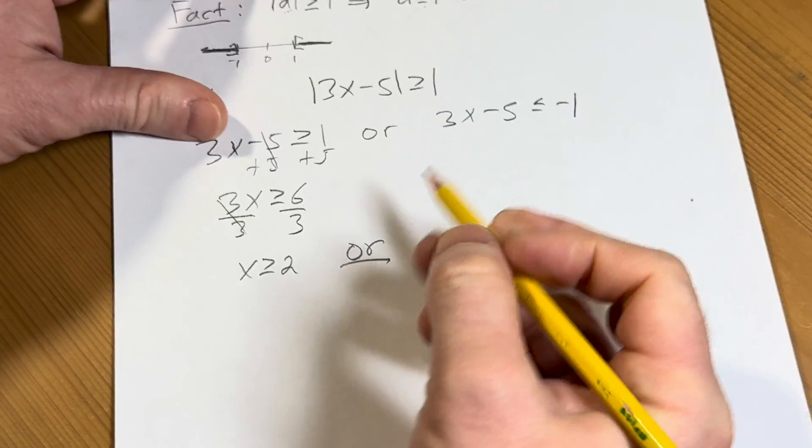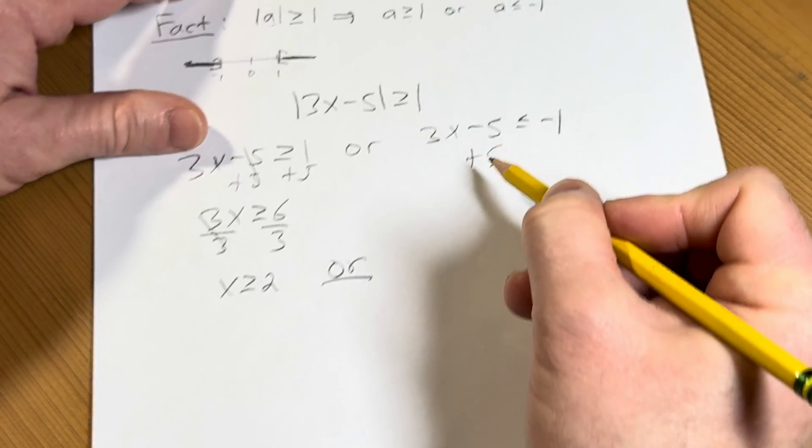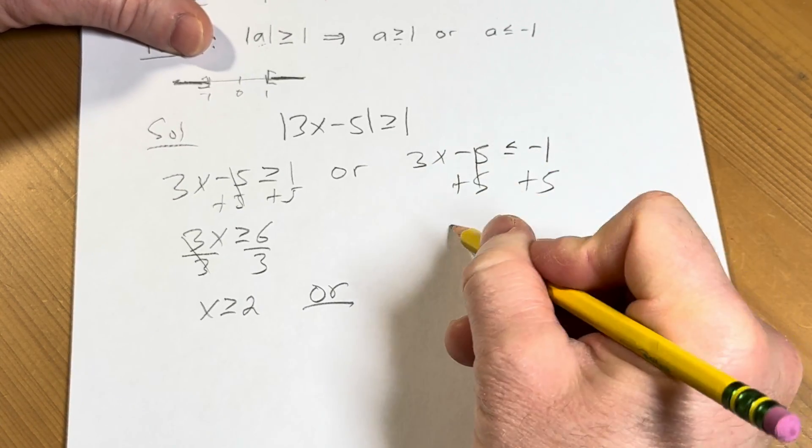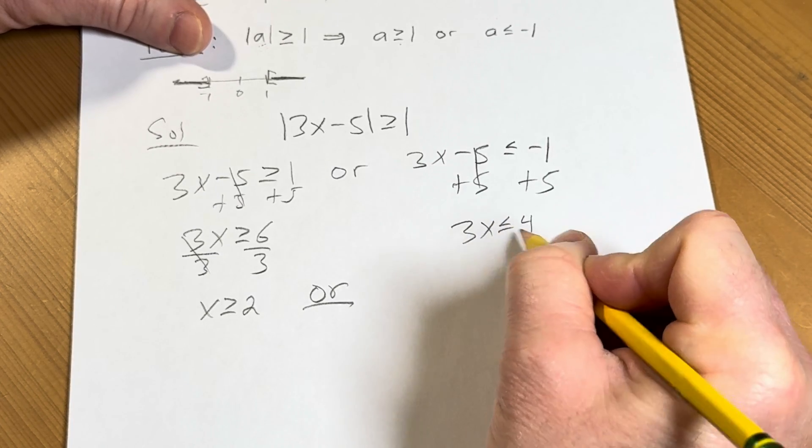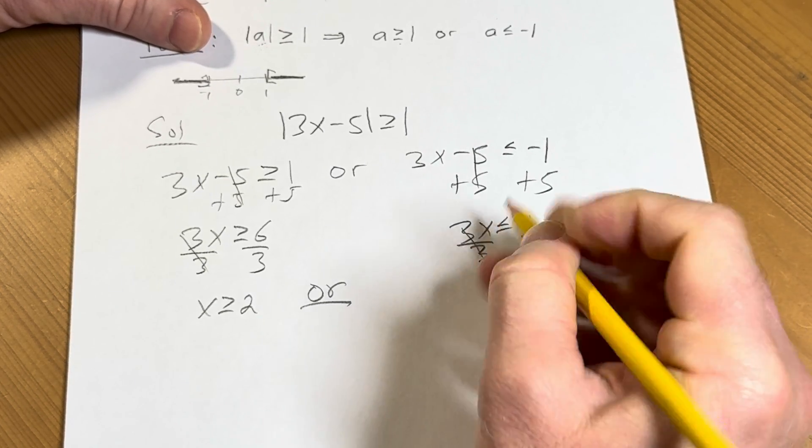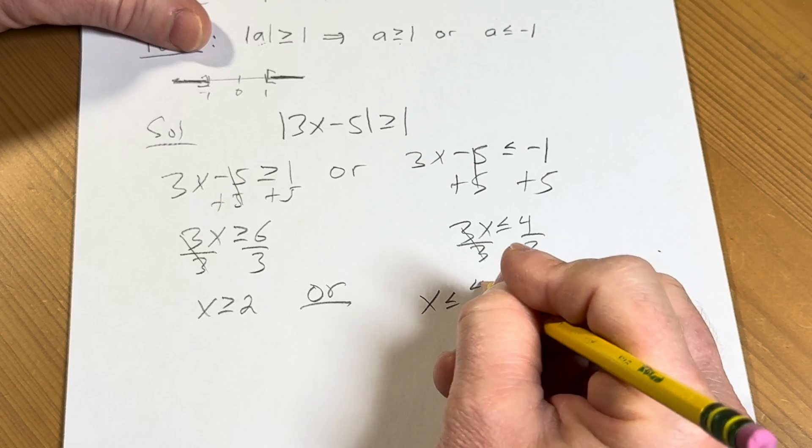Or, likewise here, we can add 5. So you have 3x less than or equal to 4. Divide by 3. So you have x less than or equal to 4 thirds.